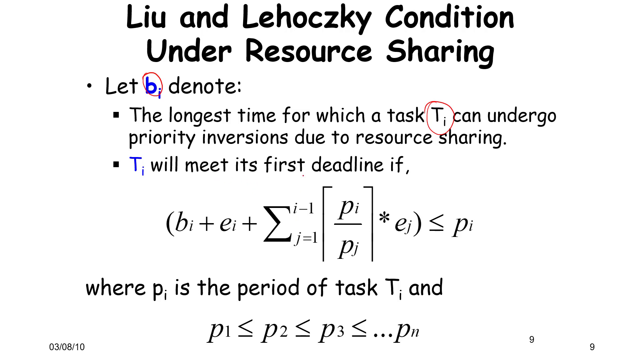Ti will meet its first deadline if I add up the inversion time to the execution time, and then add this term which we have been seeing for a while, which is floor of pi by pj times cj, which is the maximum time that other higher priority tasks can execute. If this is less than pi, where we assume pi is equal to Di, then the Liu and Lehoczky's condition is holding.